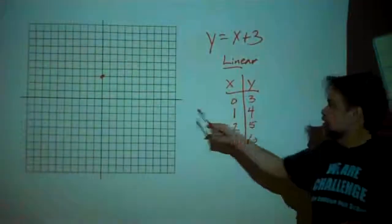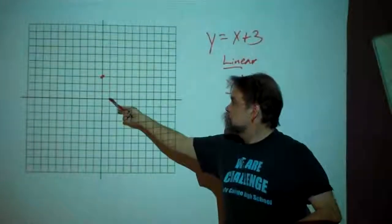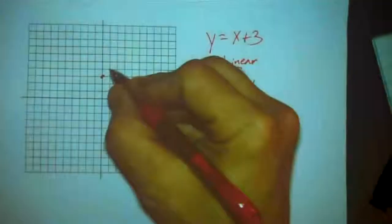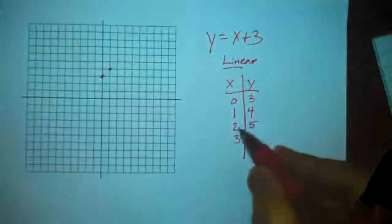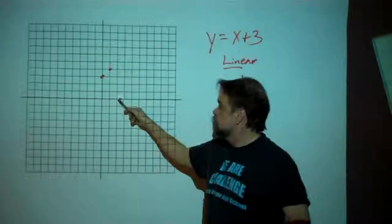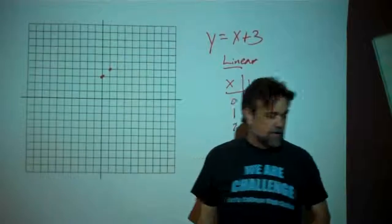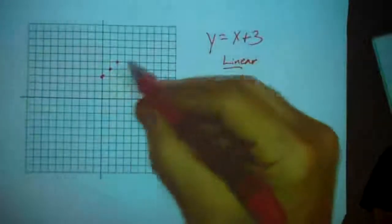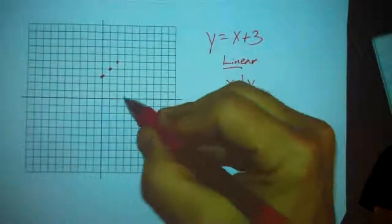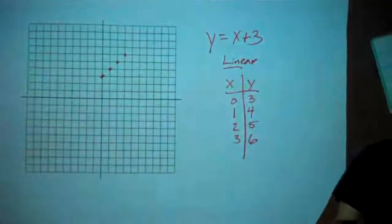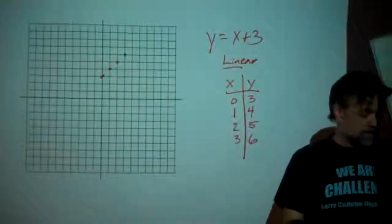The point (1, 4) — we're going to come 1 over in this direction and then up 4. The point (2, 5) — we're going to go 2 to the right because it's positive, and up 5 because it's positive. And the point (3, 6) — you can kind of see where this pattern is going. And so we end up with these points, which you'll notice line up very nicely.